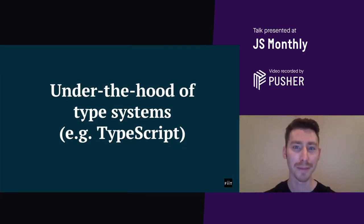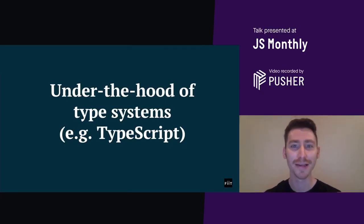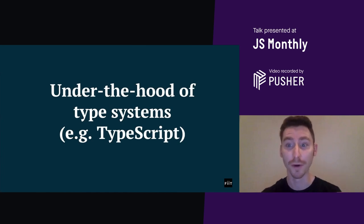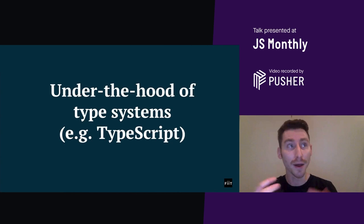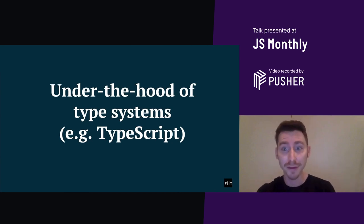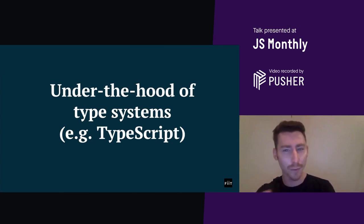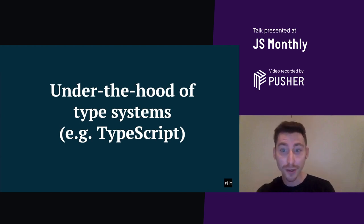Hi everyone, my name is Craig. I struggled to find an explanation from a low-level view of exactly how a JavaScript type system compiler is implemented. I understood many of the jobs of the type system, but was really unsure on the mechanisms involved and how they work together. So this talk aims to shine a light on the fundamentals at work under the hood.